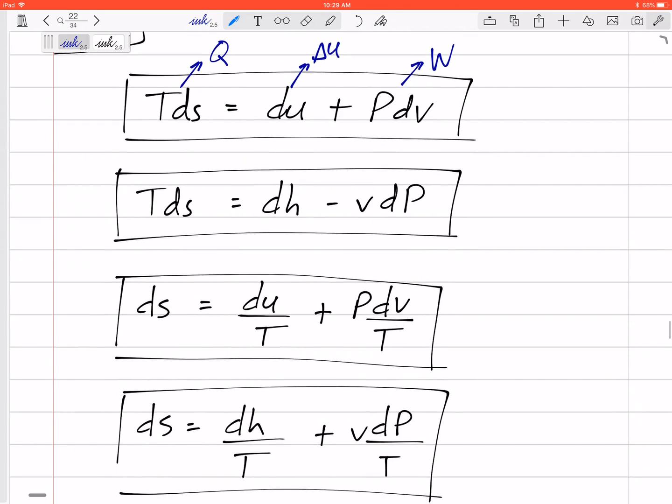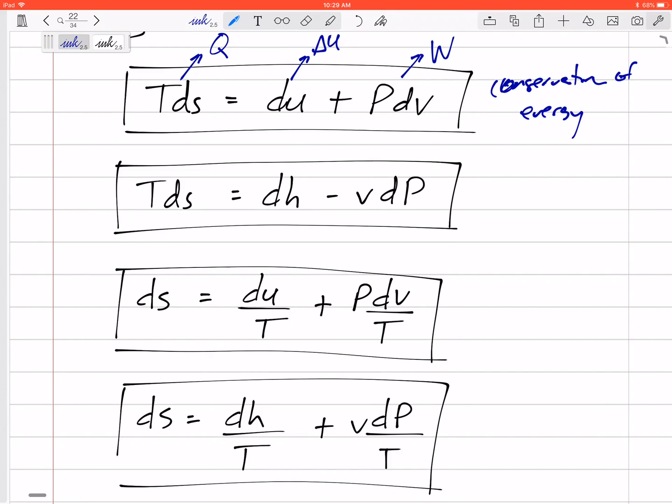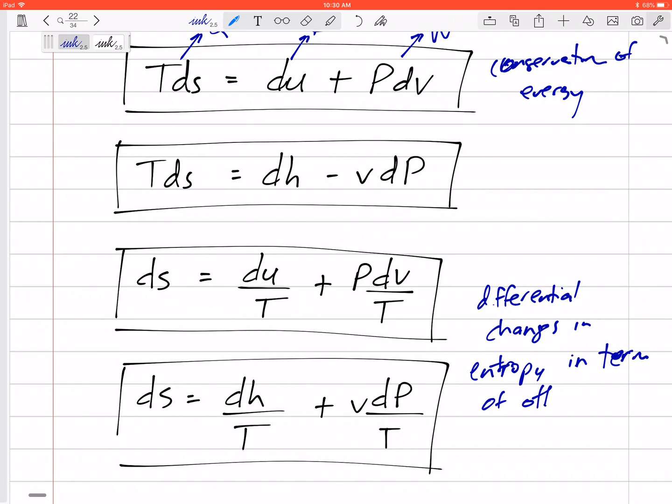Alright. So we're just going to have these four relations, these four equations so that we can use later. But they come from conservation of energy. And so these are relations. So we have equations for differential changes in entropy.